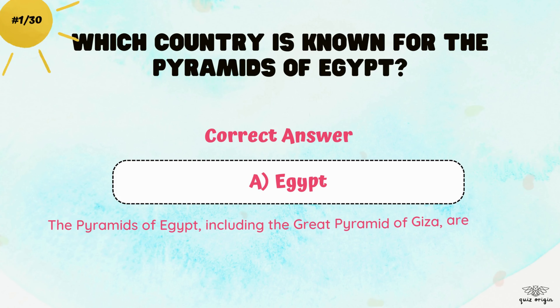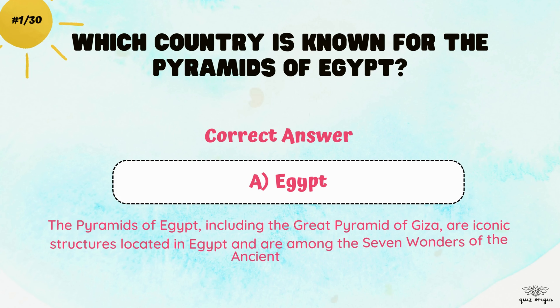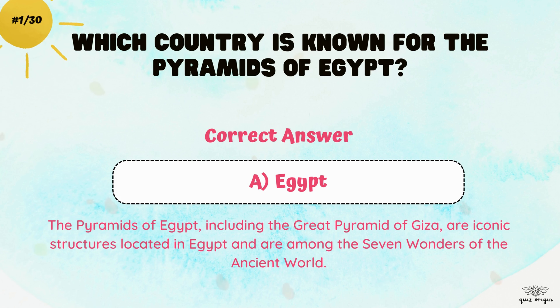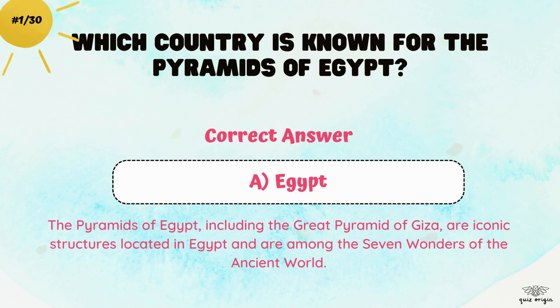The correct answer is A. Egypt. The pyramids of Egypt, including the Great Pyramid of Giza, are iconic structures located in Egypt and are among the seven wonders of the ancient world.